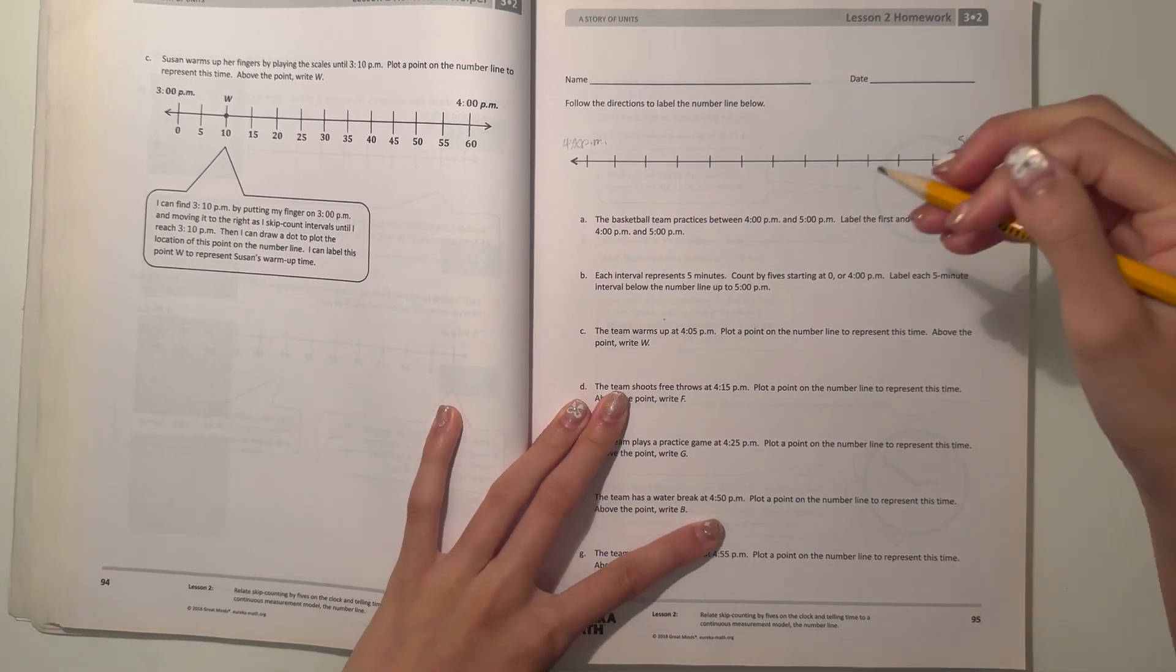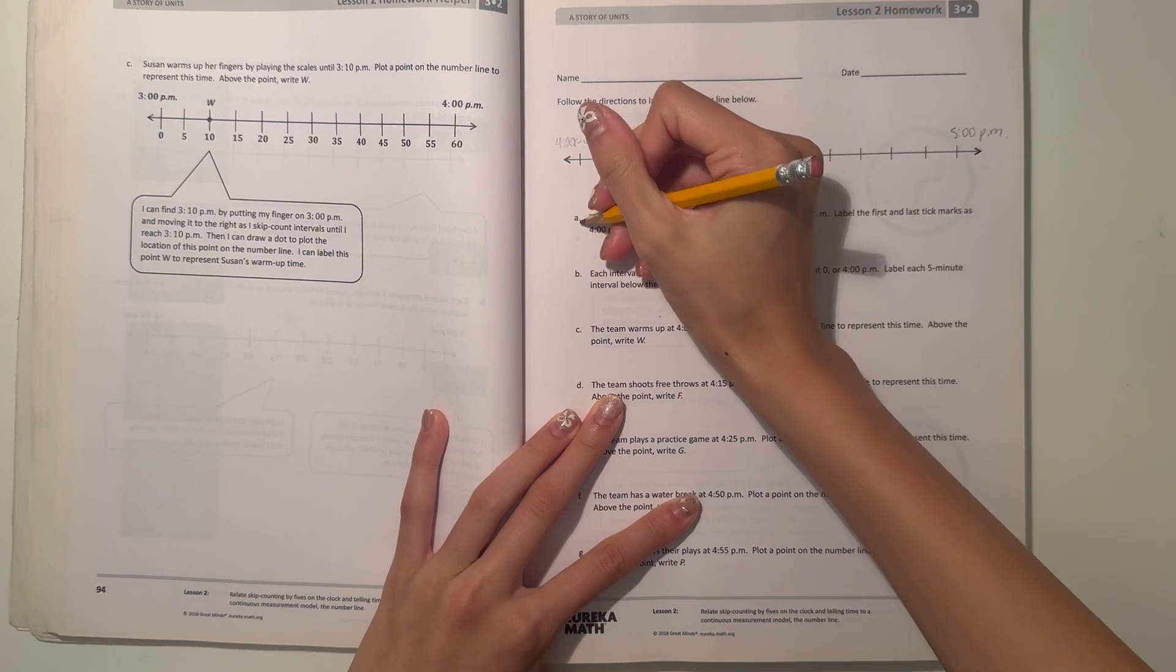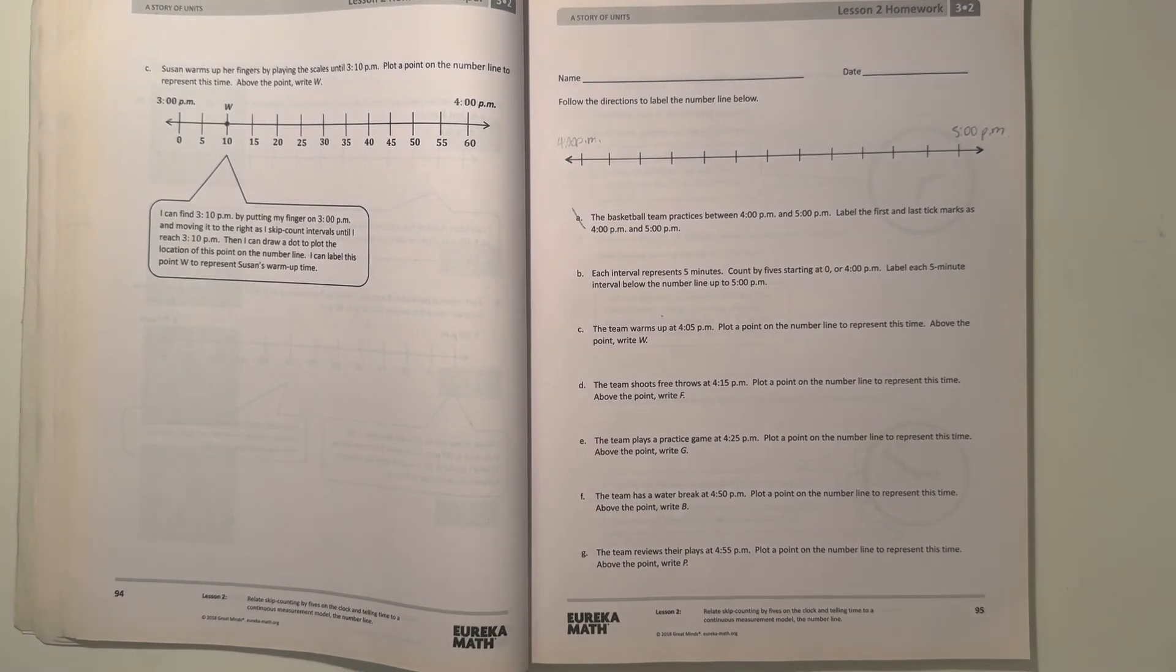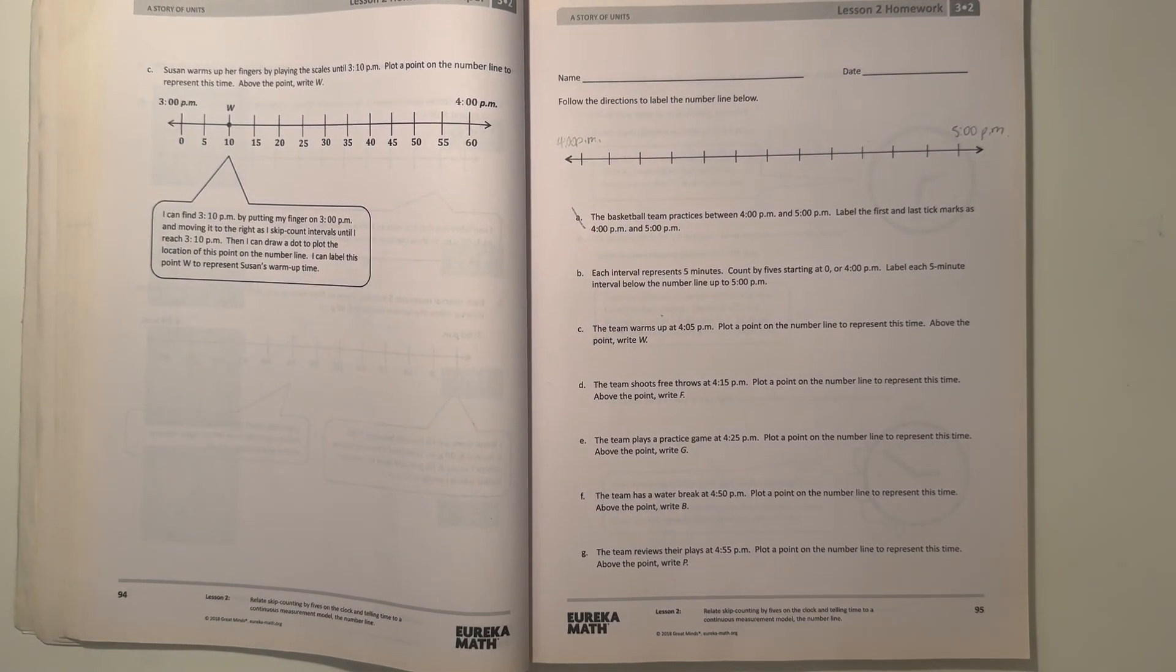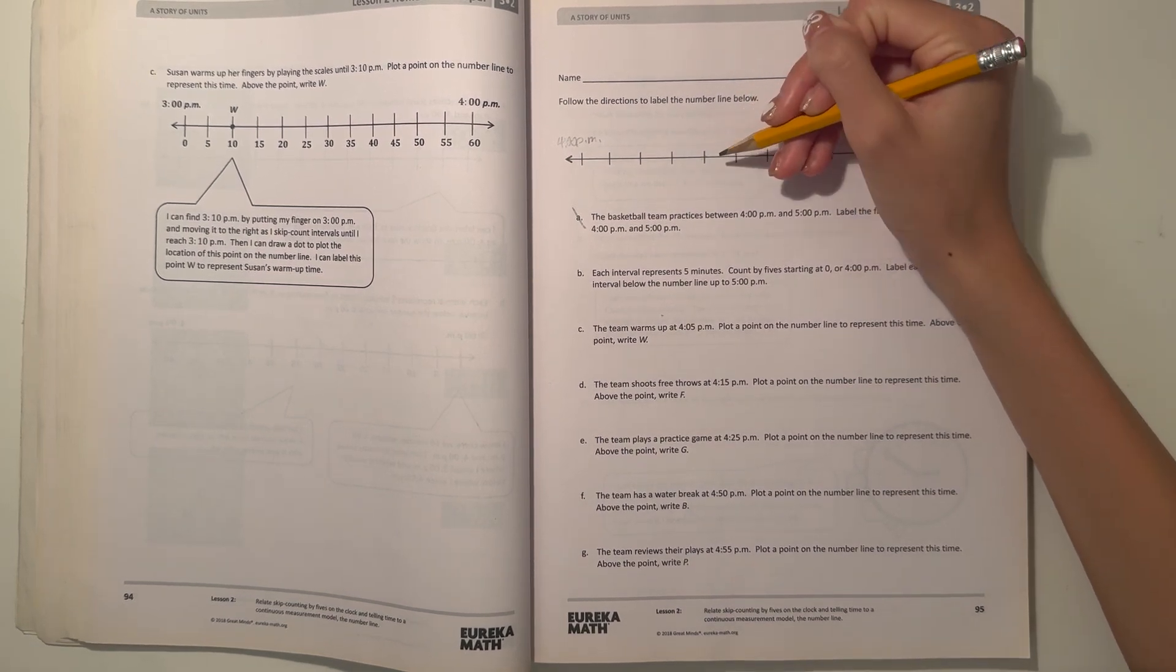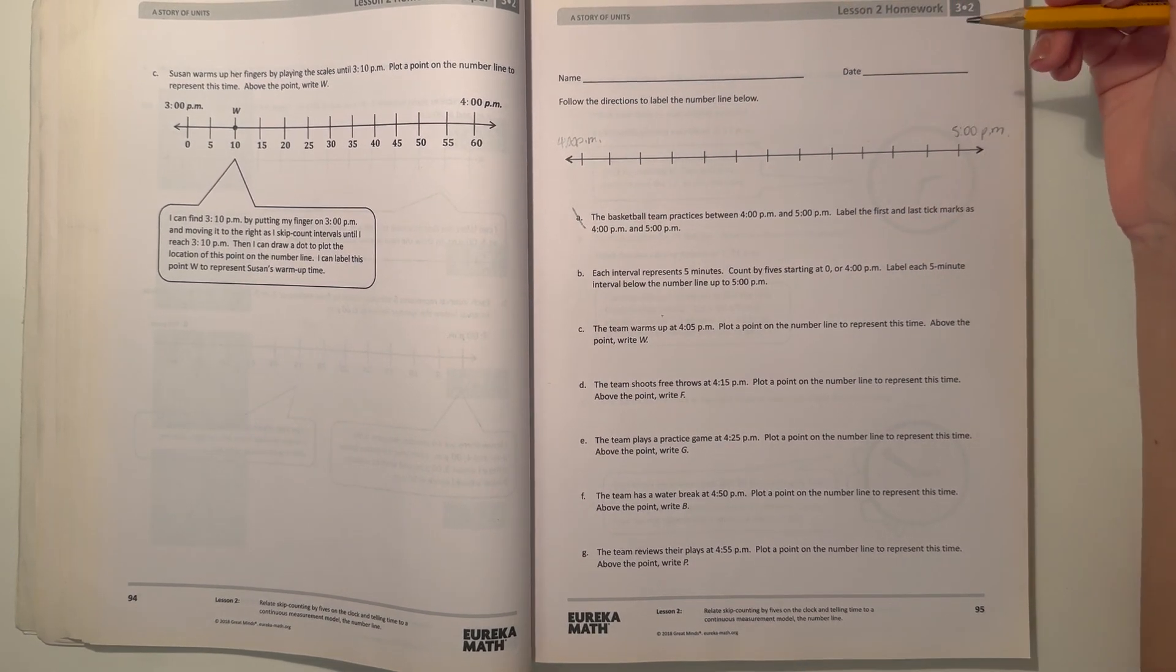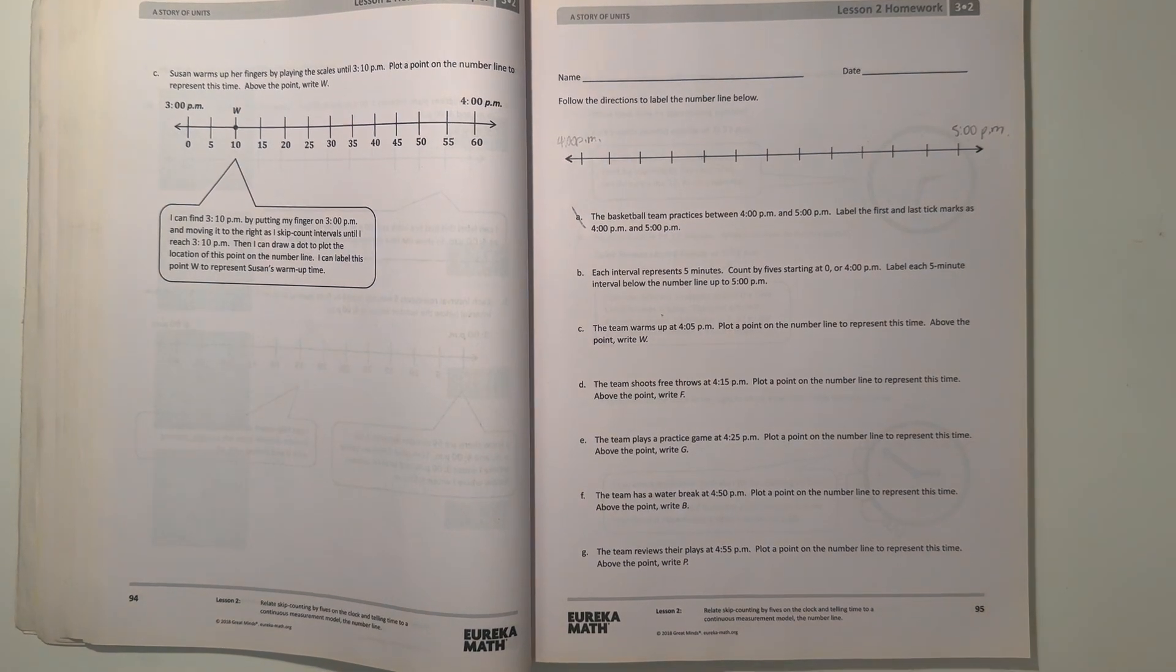So the first one is done, so we could cross that one off to mark it as done. And part b says: each interval, so each space using tick marks, represents five minutes. Count by five starting at zero or 4 p.m. and label each five-minute interval below the number line up to 5 p.m.